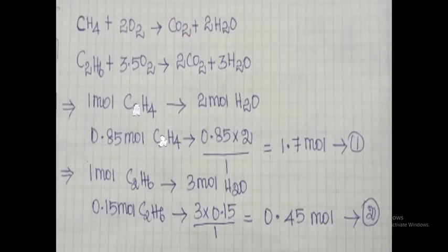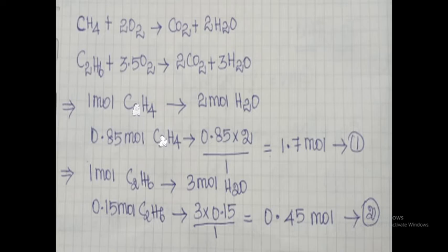We have two reactions producing water. From reaction 1, 1 mol of methane produces 2 mol of water, so 0.85 mol of methane produces 0.85 × 2/1 = 1.7 mol of water. From reaction 2, 1 mol of ethane produces 3 mol of water, so 0.15 mol of ethane produces 3 × 0.15/1 = 0.45 mol of water.